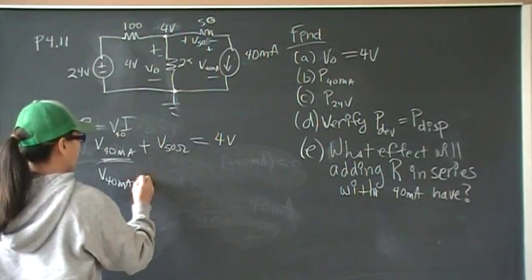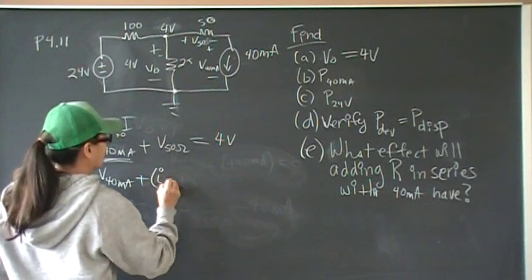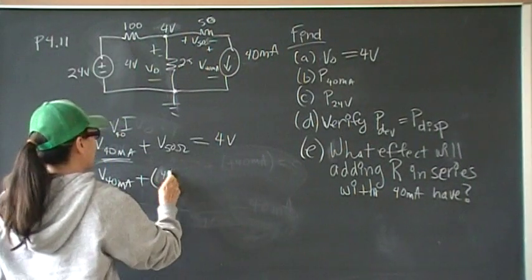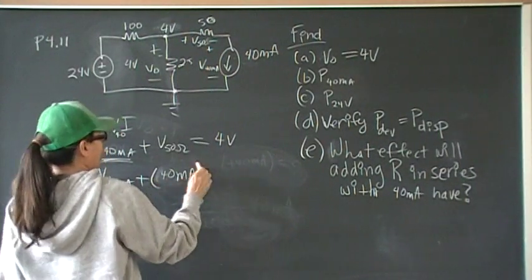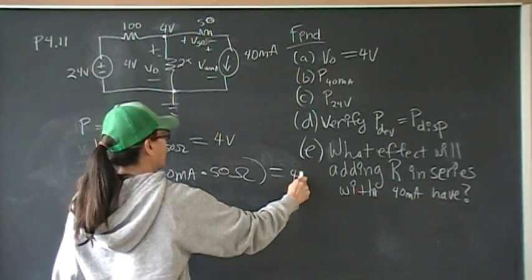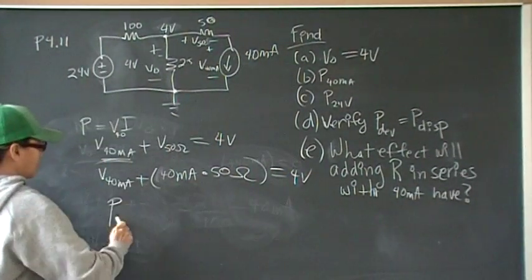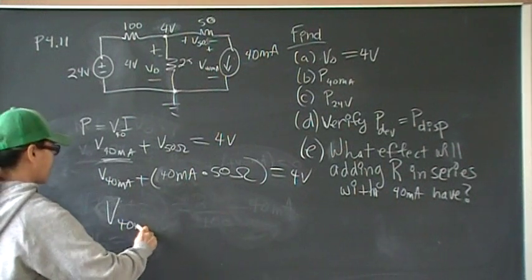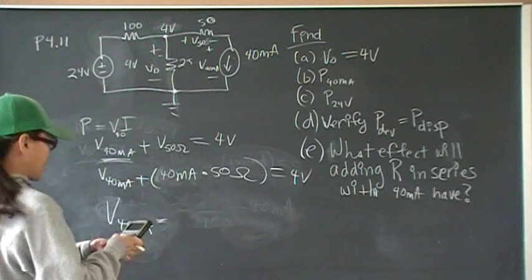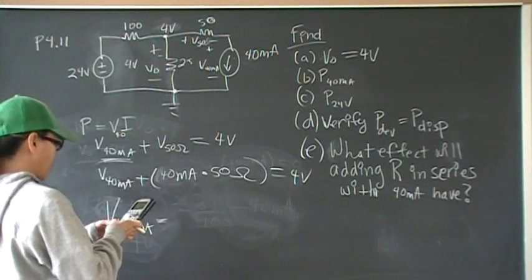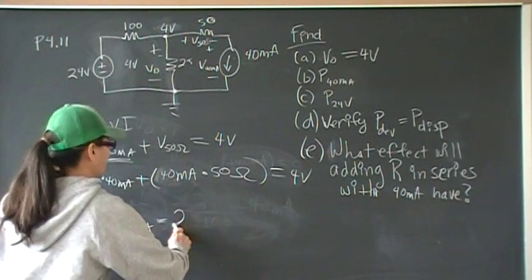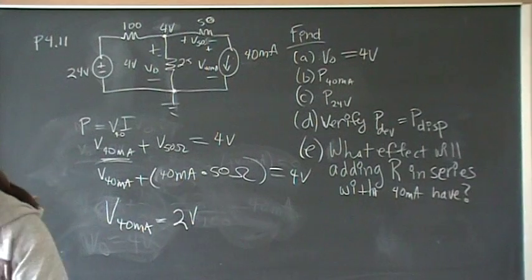And that's going to be 40 milliamps. And V is equal to IR, right? And we know what I is, the current across that is 30 milliamps. And the resistance is 50 ohms. That is equal to 4 volts. So V of 40 milliamps is equal to, we take the 4 volts, we subtract from that 0.04 times 50, and we have 2 volts as the voltage drop across the current source.